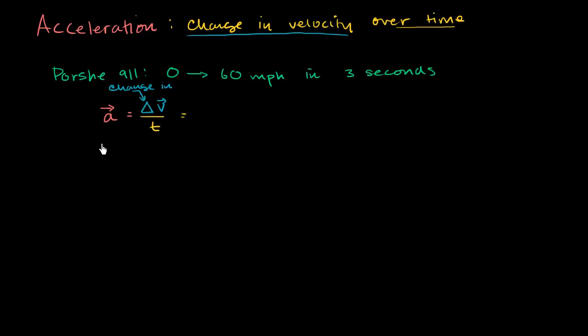So what's our change in velocity? So our final velocity is 60 miles per hour. And our original velocity was 0 miles per hour. So it's 60 minus 0 miles per hour. And then what is our time?